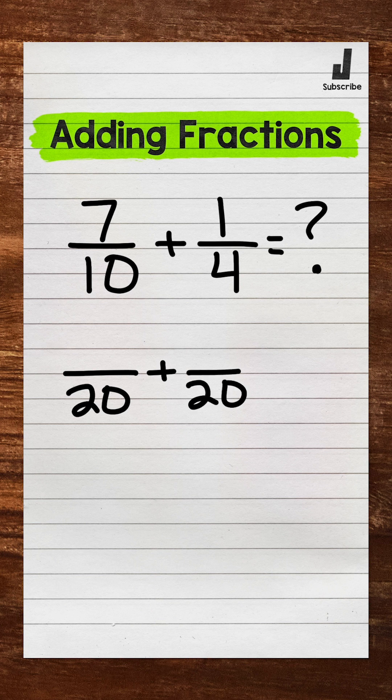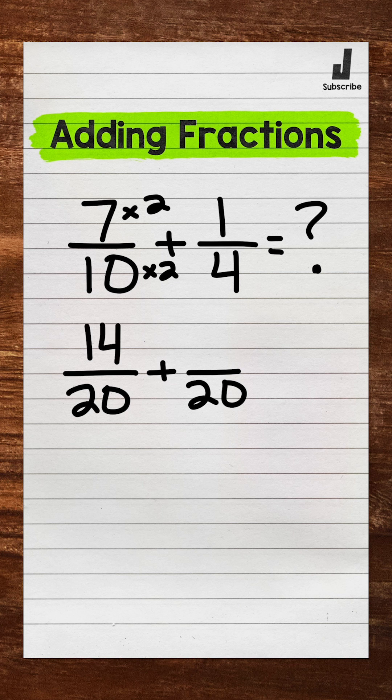7 tenths, how do we get 10 to equal 20? 10 times 2. Whatever we do to the bottom, we must do to the top. 7 times 2 is 14.